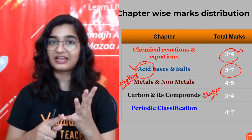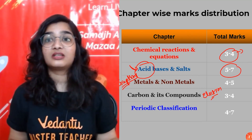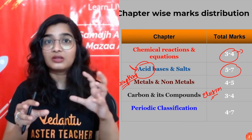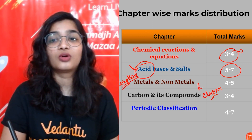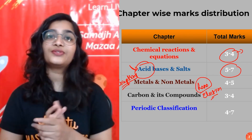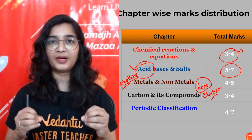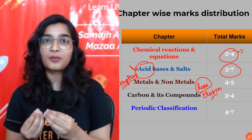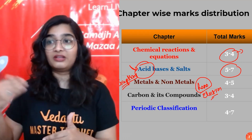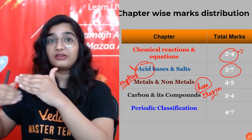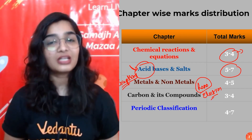The allotropes of carbon — graphite and diamond — are also very important: their physical properties, why graphite is a good conductor of electricity, and the type of bonding in each structure. Also important is the homologous series — the general formula, the difference between compounds in a series regarding physical properties (gradual change due to increasing molecular mass), and why chemical properties are similar (due to the same functional group).